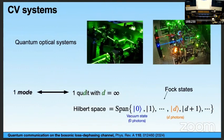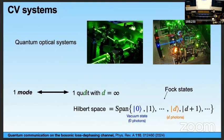Continuous variable systems are basically quantum optical systems. Here, the role of one qubit is played by the so-called one mode. One mode is basically one qubit with D equal to infinity — it's an infinite dimensional qubit. The Hilbert space of one mode is the span of ket 0, ket 1, and so on. These are called the Fock states. Ket 0 is the vacuum state, ket 1 is the single photon state, and ket D is the state with D photons.